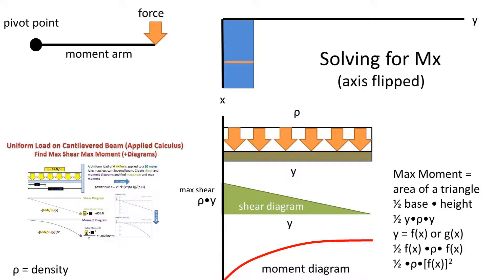After reducing it, we get that one-half times the density times f(x) squared being equal to the moment at a given point.